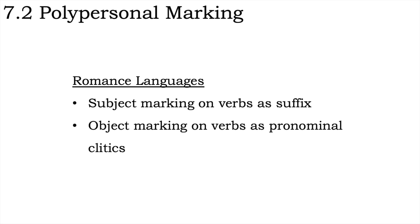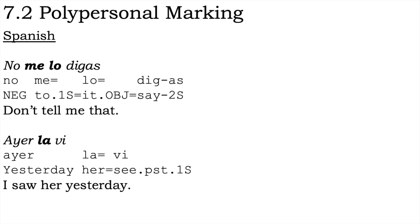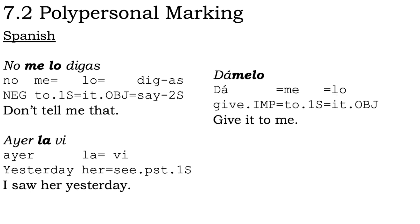Some examples from Spanish can help demonstrate this. No me lo digas. Here, the subject is marked with the verb suffix, as usual in Romance, and both the indirect object me and the direct object lo are indicated with clitics that are attached to the beginning of the verb. Here again, the verb is inflected to mark the subject, and the direct object la is marked with a clitic preposed to the verb. Once again, the verb inflects to mark its subject, and the objects are marked with clitics, though in this case they follow the verb, and by Spanish spelling convention are written as one word.